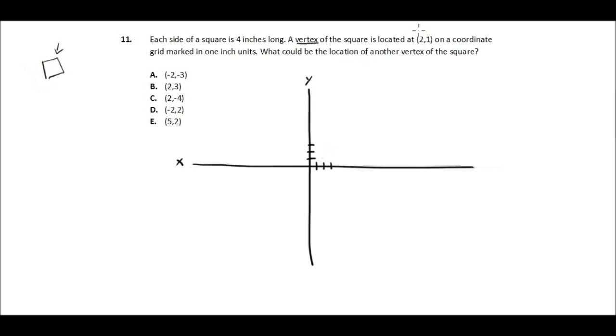So this vertex is located on this coordinate grid at 2, 1. The coordinates are always given in x and then y. So 2 is x and 1 is y. Here's the x-axis and here's the y-axis, and our point is right here, over 2 and up 1. So if our vertex is there, the question is, what could be the location of another vertex of the square?